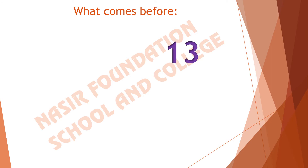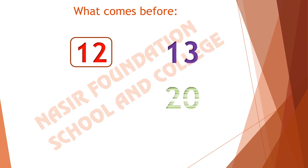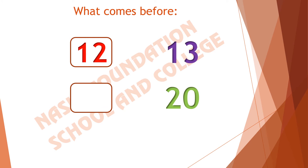What will come before 13? What number we will get if we subtract 1 from 13? We will get 12. The previous number is 12. What comes before 20? Subtract 1 from 20. What we will get? We will get 19. The previous number is 19.